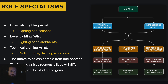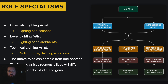Cinematic lighting involves a lot of sequence work — in Unreal, you're in Sequencer quite a lot, lighting characters in various poses and scenes: over-the-shoulder, close-ups, telephoto, wide angle. Level lighting means you're lighting the world, the zone, the area. And technical lighting involves fixing problems and setting up lighting pipelines to help lighters do their job.